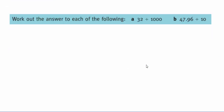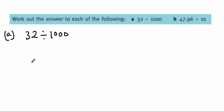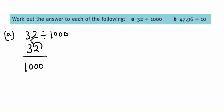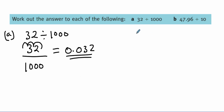Work out the answer to the following division. 32 divided by 1,000. You write this as a fraction: 32 over 1,000. You have three zeros, so you count three numbers from your right hand side. The answer will be 0.032.